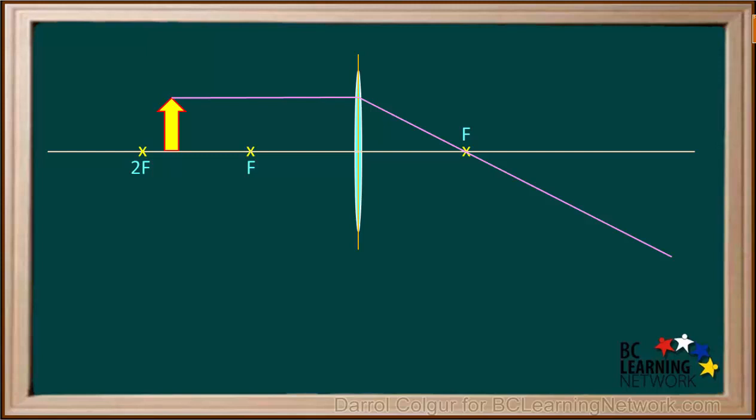Now we draw a straight line from the top of the object through the middle of the lens, like this.